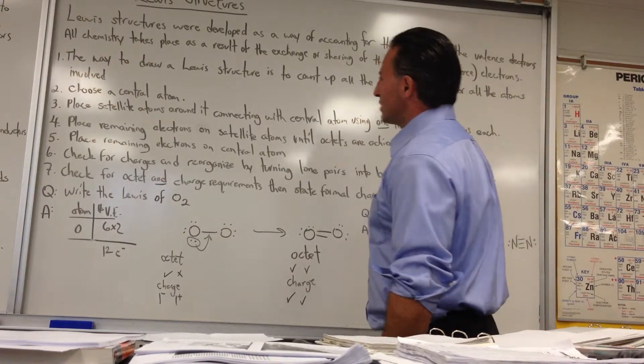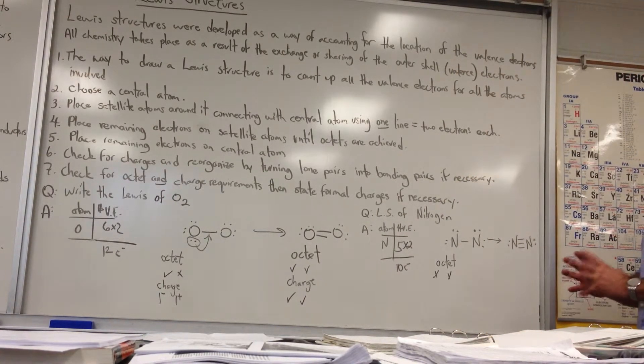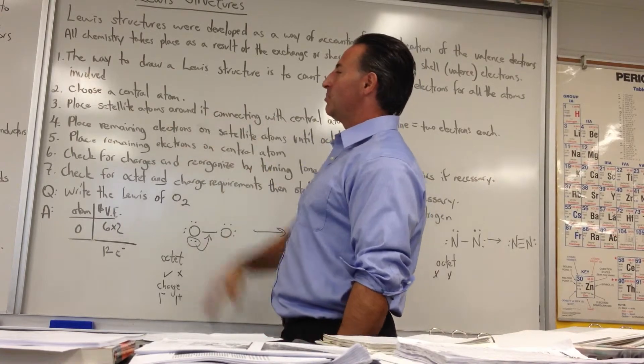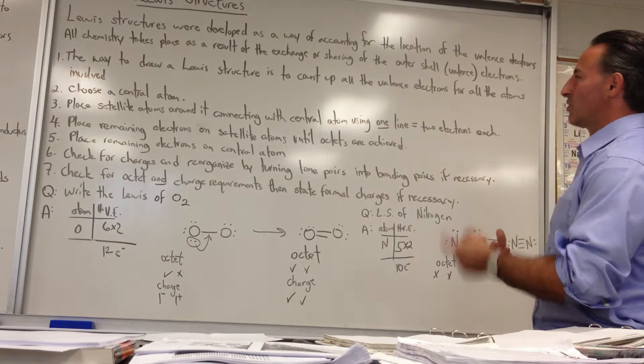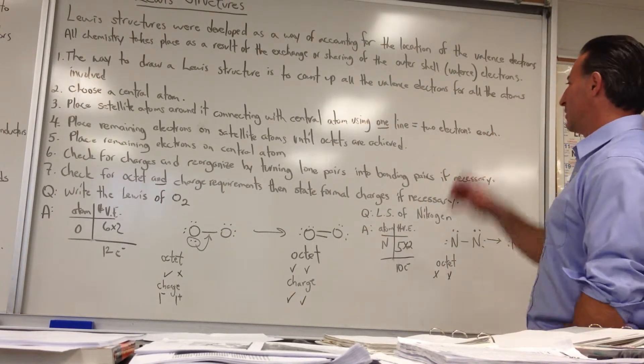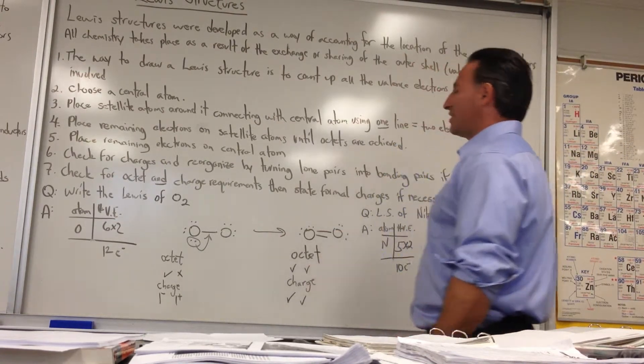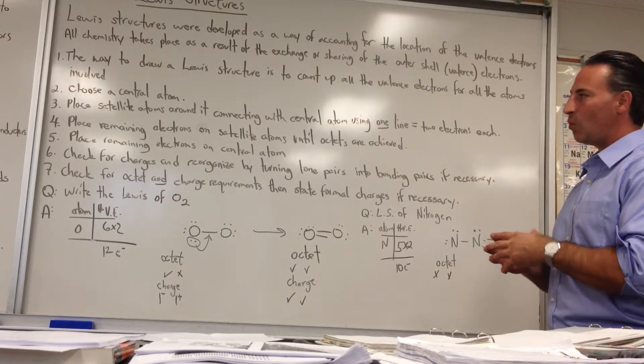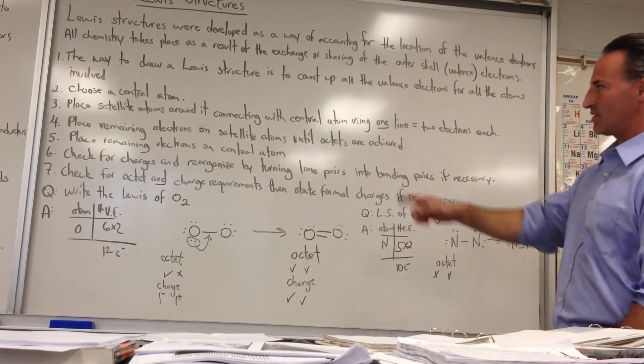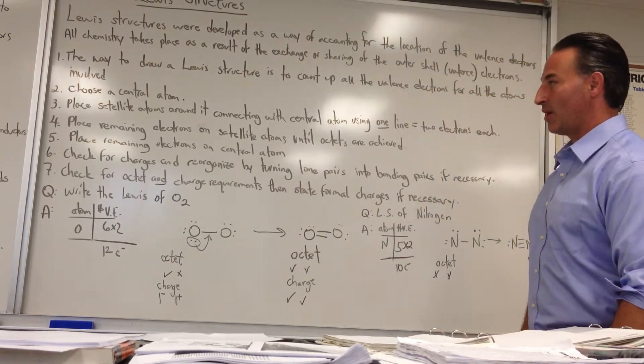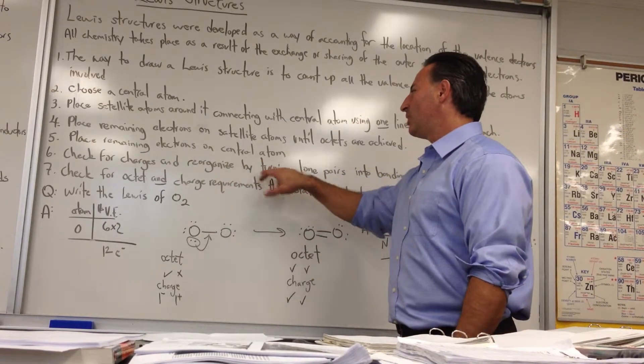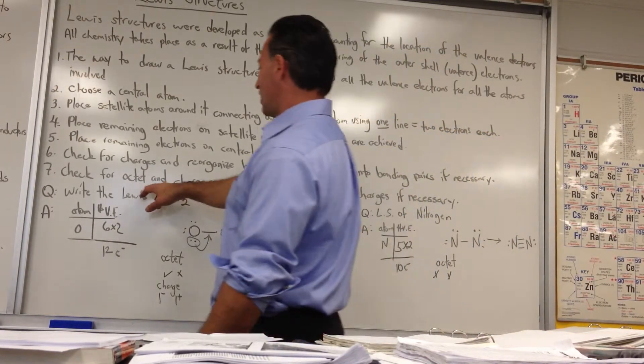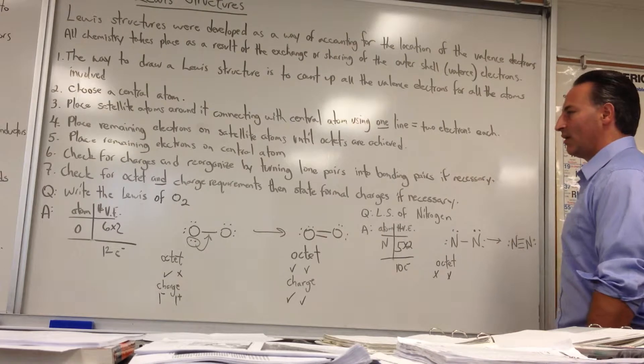So, when you want to draw a Lewis structure, the first thing you have to do is count up all the valence electrons for all the atoms involved in the molecule. Then, you choose a central atom. Usually, the single one is the central atom, if there is a central atom. Three, you place the satellite atoms around the central atom, connecting each one with one bond using one line. One line symbolizes two electrons. Fourthly, you place the remaining electrons on the satellite atoms until octets are achieved. What is an octet? Each atom likes to have eight electrons in its vicinity, whether they actually are used for bonding or just close to the atom. And you'll see when I do the example what I mean by that. Fifthly, place the remaining electrons on the central atom if there are any electrons left over. And then, we check for charges. We reorganize the molecule by turning lone pairs into bonding pairs if necessary to refine the Lewis structure. Then, we again check for octet and charge requirements. And we can state formal charges if there are any.